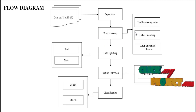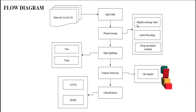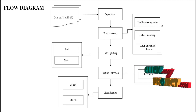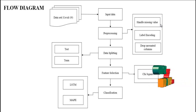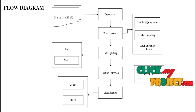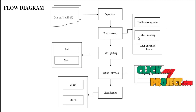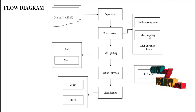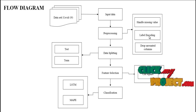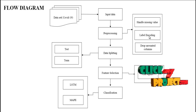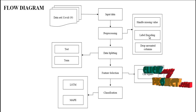In preprocessing, we use three techniques: handling missing values, label encoding, and dropping unwanted columns. Handling missing values means we check for any missing values in our input data. If there are any, we replace them with zeros or null values to avoid wrong predictions. We use label encoding to encode input data — string values are converted to integers. Then we drop unwanted columns from our input data.